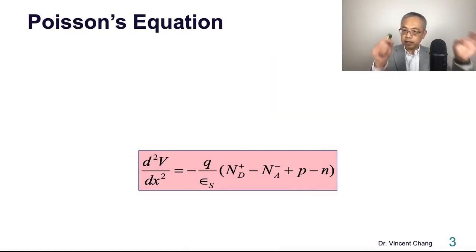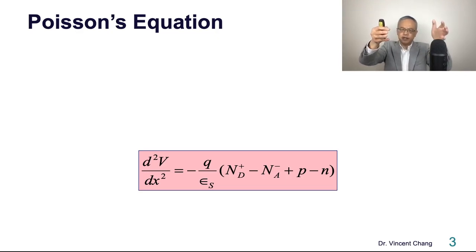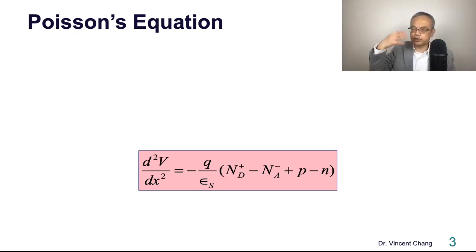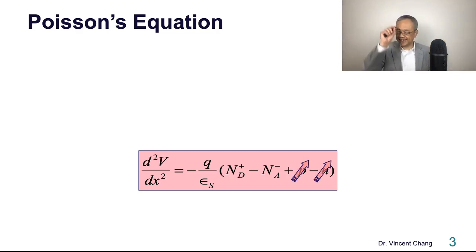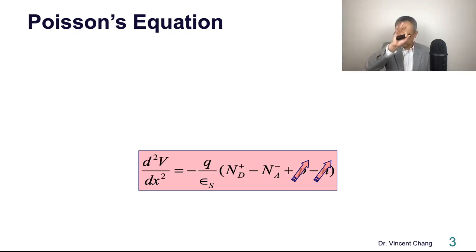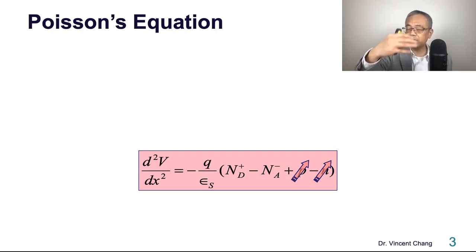Because it's the depletion layer, we're going to apply this onto the depletion region. In the depletion layer, the p and n carrier concentrations are extremely small compared to both neutral regions. For this reason, we can simply neglect the third and last terms — the positive hole concentration and the negative electron concentration within the depletion region — because they are extremely small compared to the donor and acceptor ion concentrations.